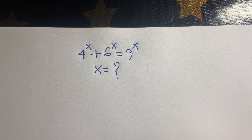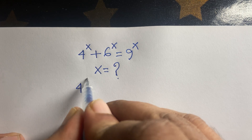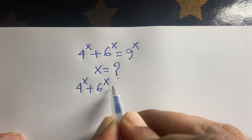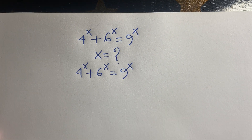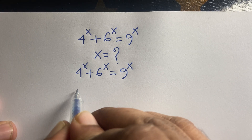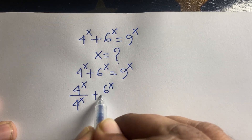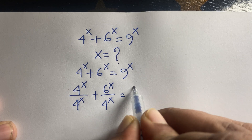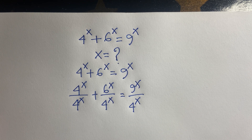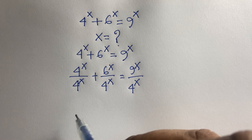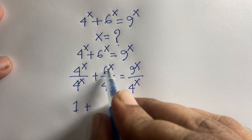So how to solve this question? We have 4 to the power x plus 6 to the power x is equal to 9 to the power x. Then I divide both sides by 4 to the power x: 4^x divided by 4^x plus 6^x divided by 4^x is equal to 9^x divided by 4^x. This first term cancels, so it becomes 1, and here we have 6^x over 4^x.